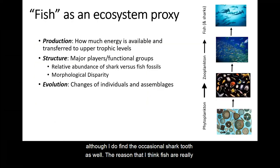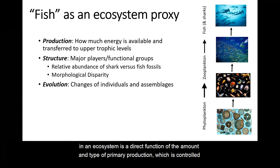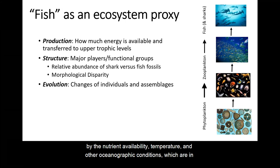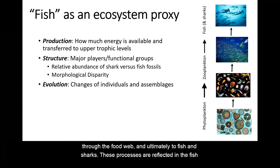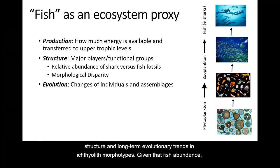The reason that I think fish are really interesting and worth studying is that they are an ecosystem proxy. The abundance of fish present in an ecosystem is a direct function of the amount and type of primary production, which is controlled by nutrient availability, temperature, and other oceanographic conditions, which are in turn modulated by trophic transfer processes that pass that energy from the primary producers through the food web, and ultimately to fish and sharks. These processes are reflected in the fish microfossil record, not only as changes in total fish abundance, but also as changes in community structure and long-term evolutionary trends in ichthyolith morphotypes.